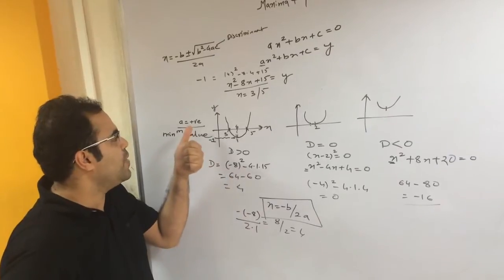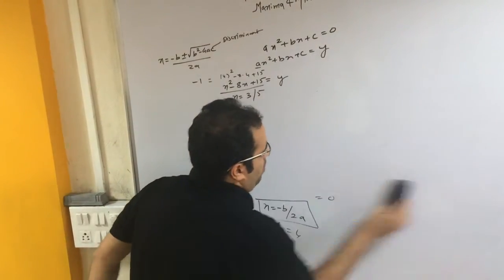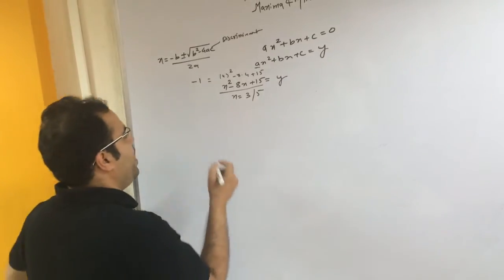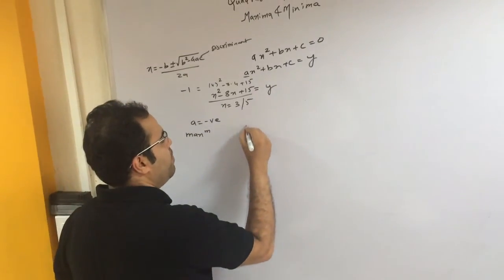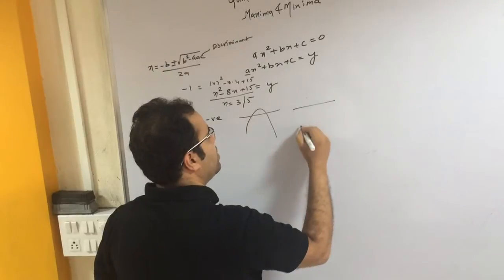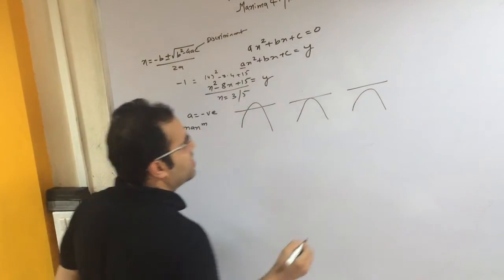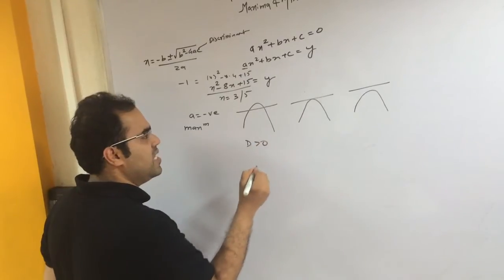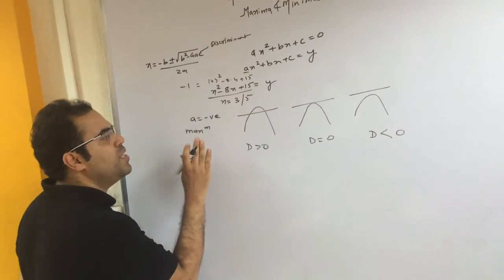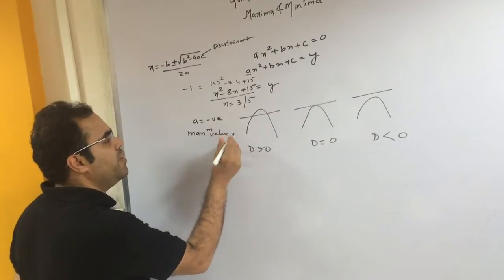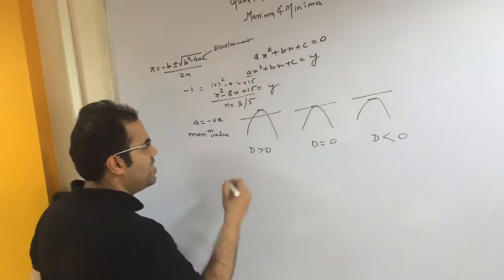Now we'll see what happens when a is negative. When a is negative, the graph will have a maximum value. There are again three graph cases — an inverted U-shape with D > 0 (cutting x-axis at two points), D = 0 (just touching x-axis), and D < 0 (not touching x-axis). For all of them a is negative, and it will have a maximum value. There is no minimum value because the graph goes to minus infinity.